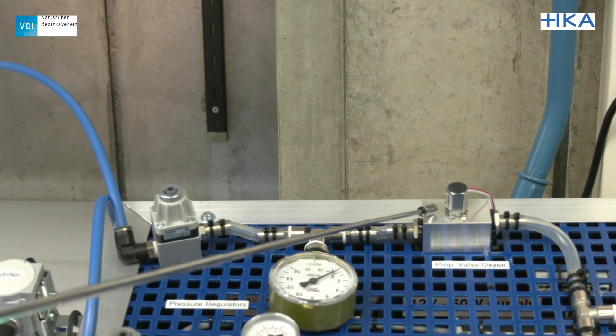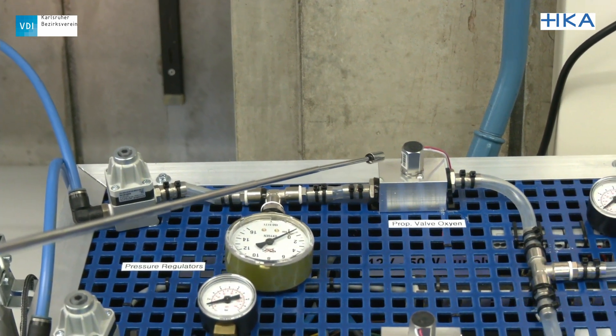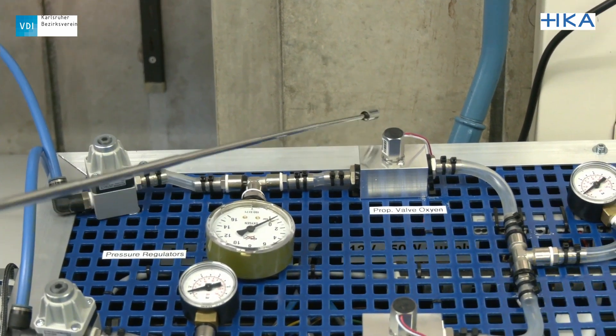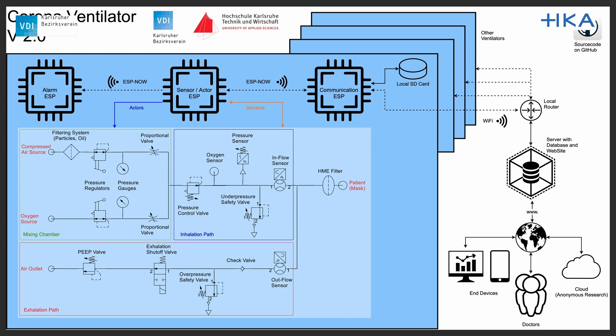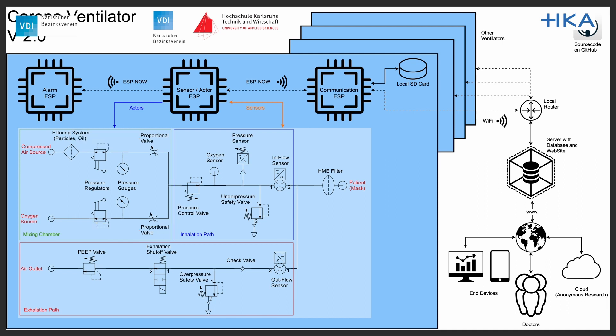To perform the mixing task, each line is followed by an electrically driven proportional valve, with which the flow of the individual gases can be adjusted. By controlling the valves anti-proportionally, the oxygen concentration can thus be adjusted between 21 and 100 percent. The oxygen level of the respiration air mixture is measured with a galvanic O2 sensor.